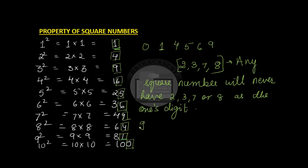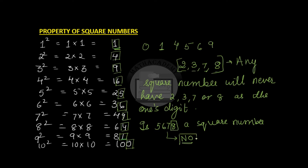So there can be a question: is 5678 a square number? What we have to do is look at the units digit. If the units digit of the number is anything out of 2, 3, 7, and 8, then you can outright say no, it can't be a square number, because a square number can never have the ones digit as 2, 3, 7, or 8. On the other hand, if I give you a number say 5625, this number is ending in 5, but that doesn't mean it is surely a square number — it can be or it cannot be. However, if a number ends with 2, 3, 7, or 8, it is surely not a square number.